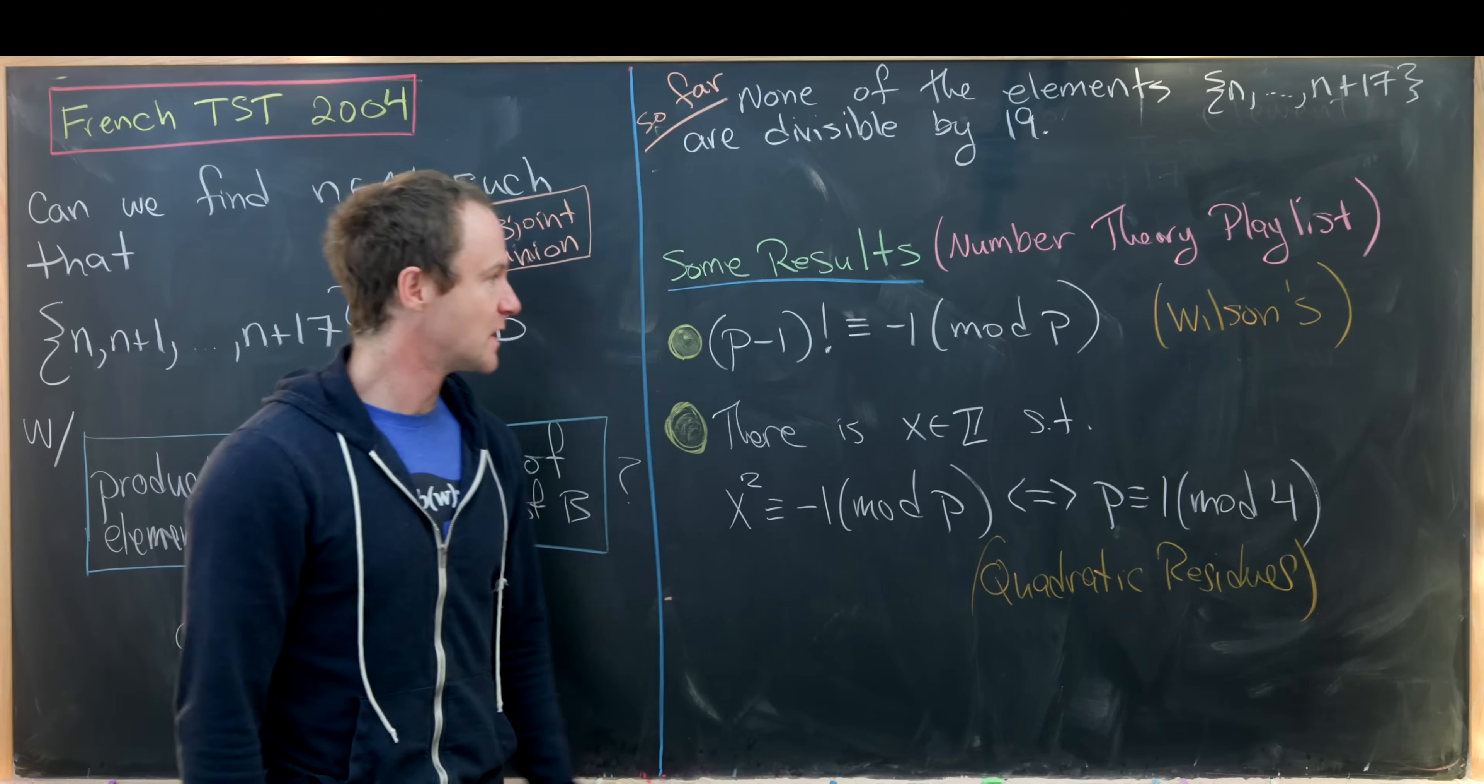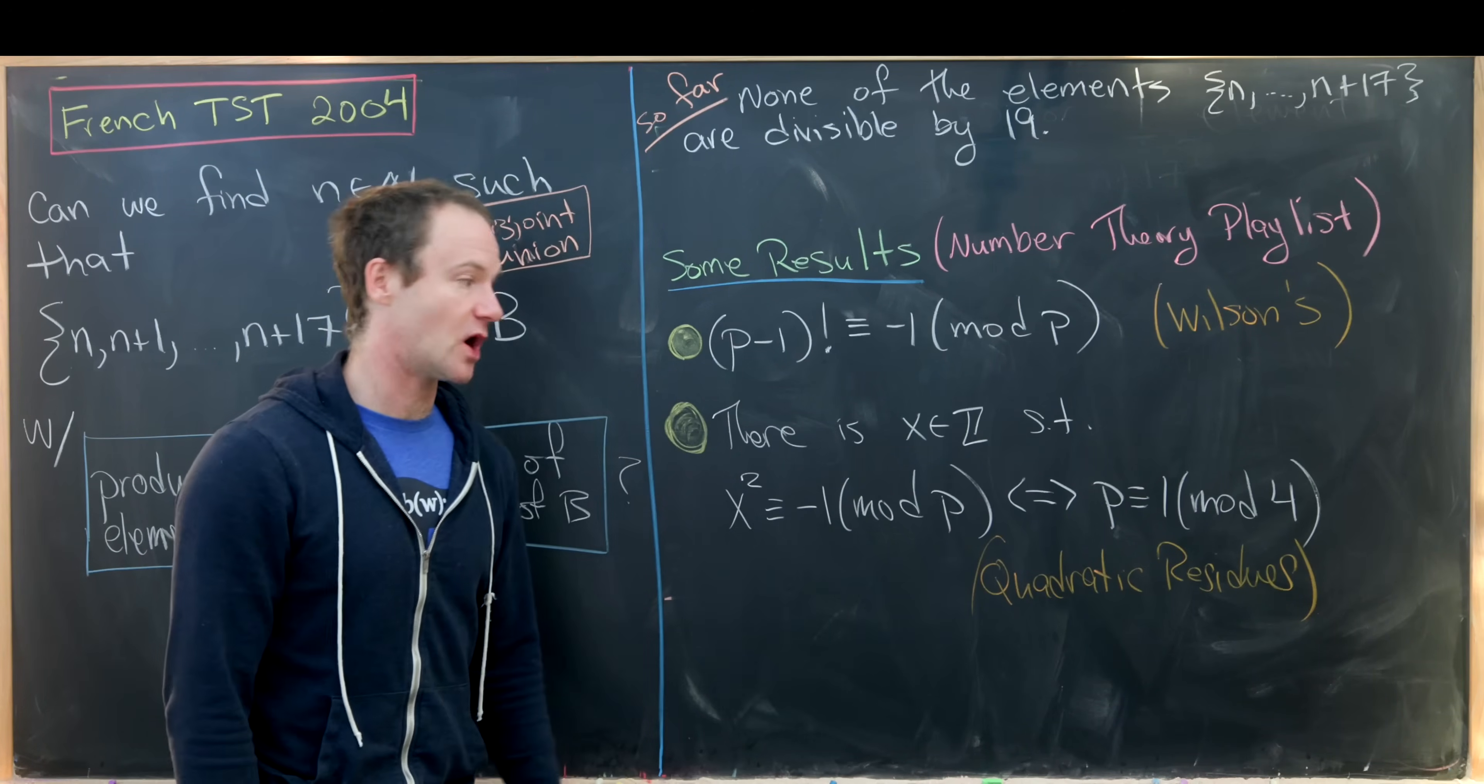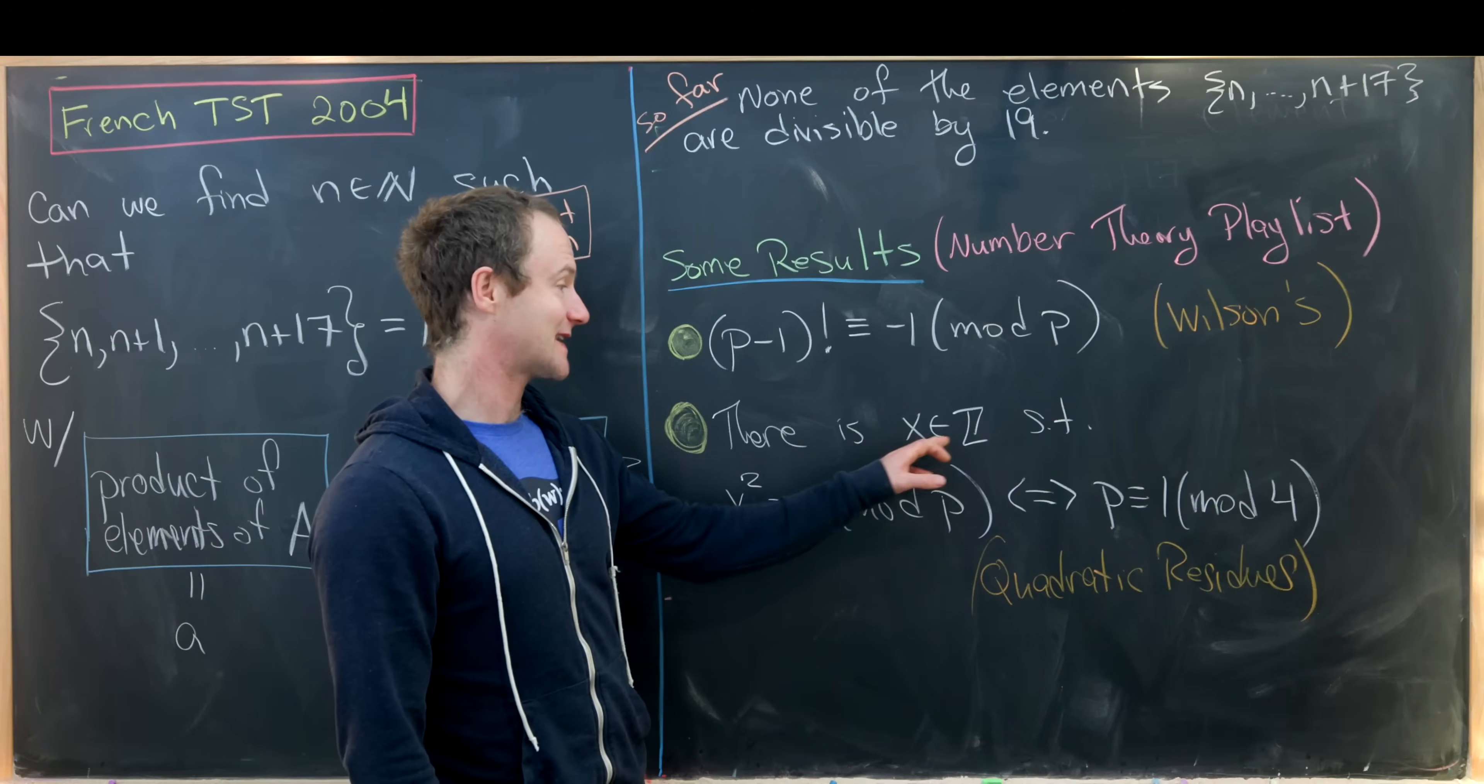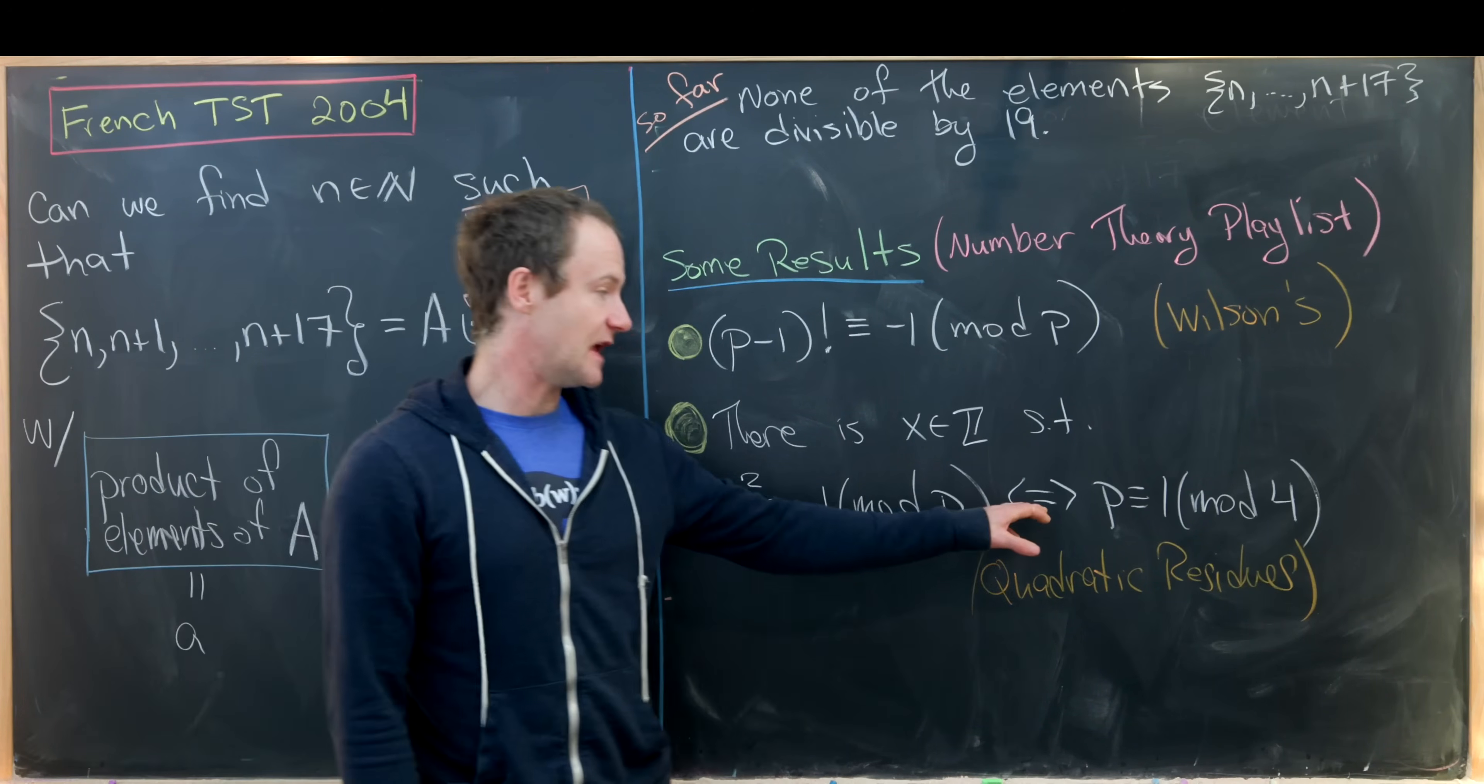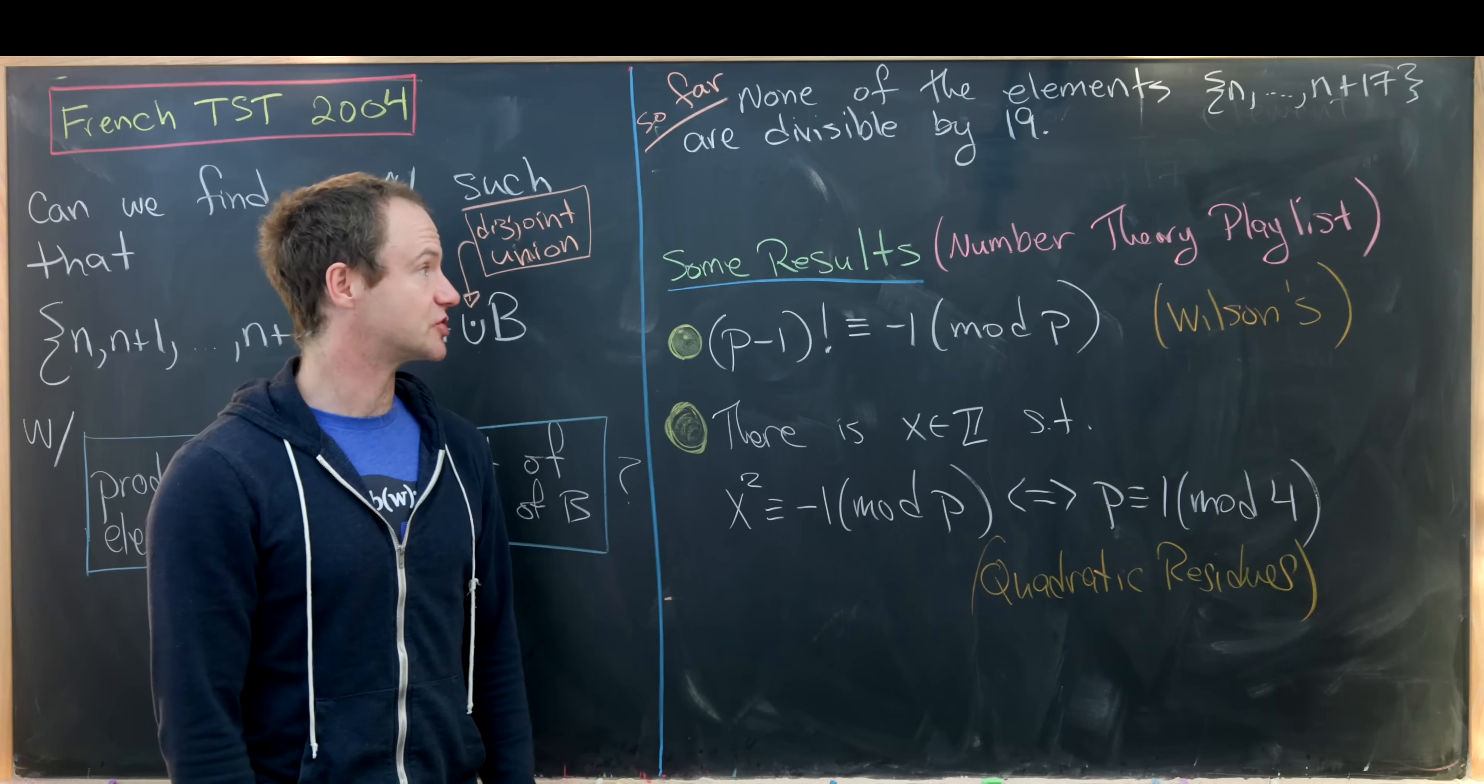The first is Wilson's theorem, which says for all prime numbers p, (p-1)! is congruent to -1 mod p. And then we'll take something from the notion of quadratic residues. Quadratic residues studies when certain numbers are perfect squares mod n. So there is an x, which is an integer such that x² ≡ -1, in other words, -1 is a perfect square modulo p, if and only if p is congruent to 1 mod 4. And this is if p is an odd prime. So if p is 3 mod 4, then this congruence has no solution.